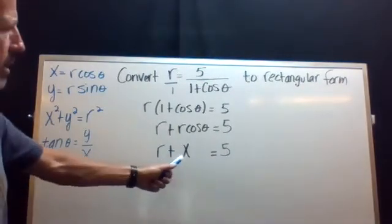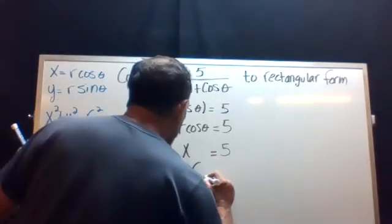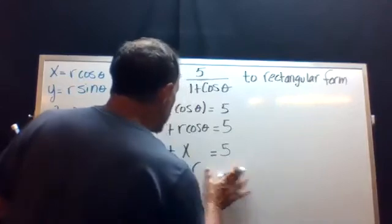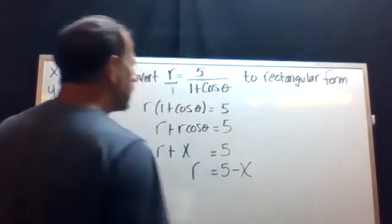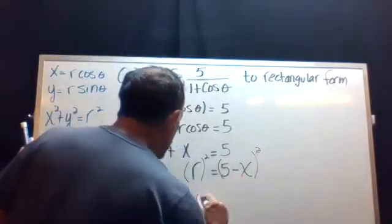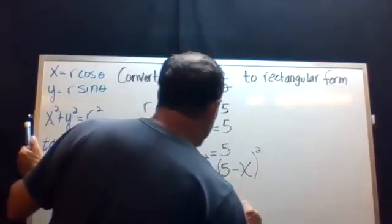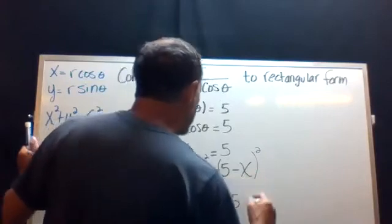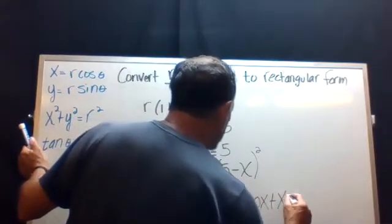So how do we get r squared? We can move x to the other side. So we get r equals five minus x. And now we can square both sides. And we get r squared equals 25 minus 10x plus x squared.